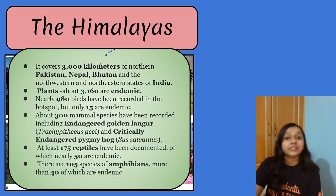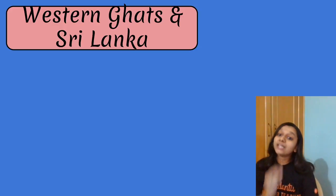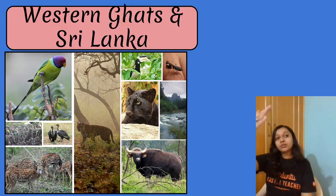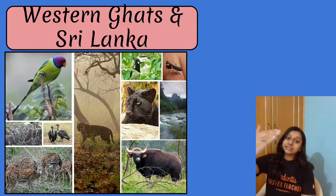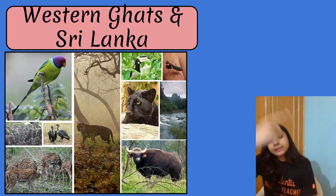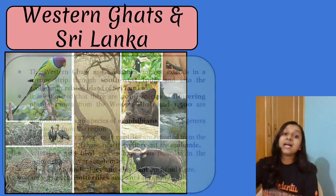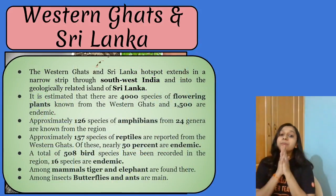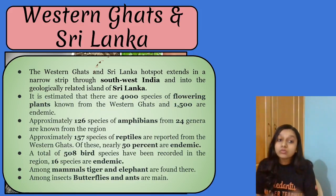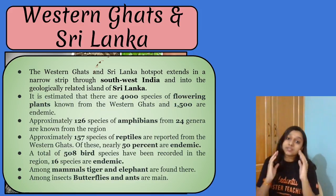The second Biodiversity Hotspot is known as the Western Ghats and Sri Lankan region. It covers Maharashtra, Karnataka, Kerala, and some parts of Sri Lanka. The area covered is very large. There are approximately 4,000 species of angiosperms or flowering plants in the Western Ghats alone.